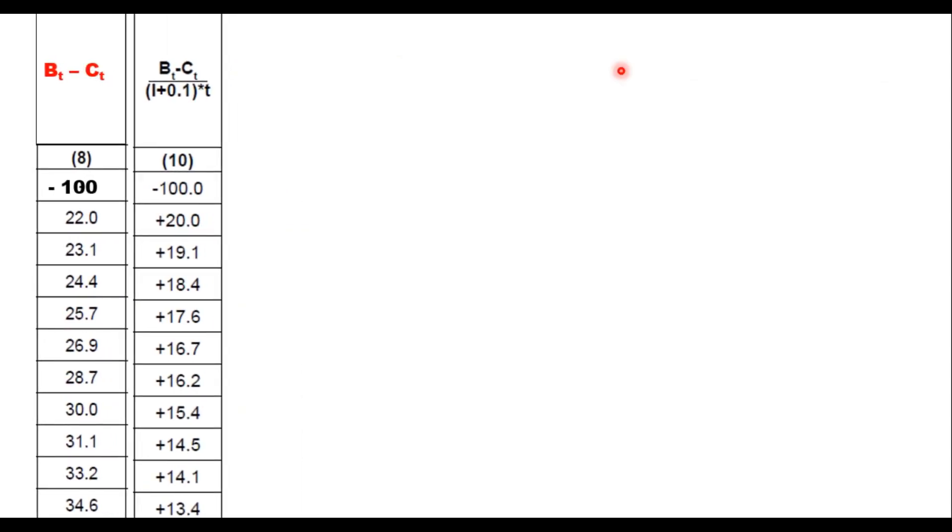And this 20 is 22 upon 1 plus 0.1 power 1 because this is the first year. So it is 20. This is 20. Similarly, for the second row, this is 23.1 upon 1 plus 0.1 power 2 because it is second year, 19.1. Similarly, you calculate for each year what is the NPV value.